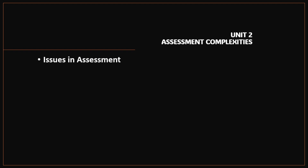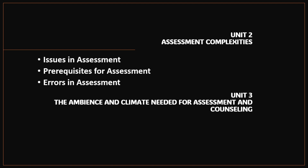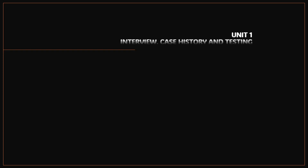From Unit 2, you need to look into issues in assessment, prerequisites for assessment, and errors in assessment. From Unit 3, just look into initial counseling scale theory. You can omit Unit 4 from Block 1.